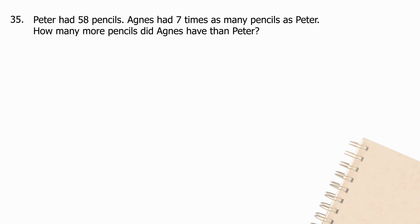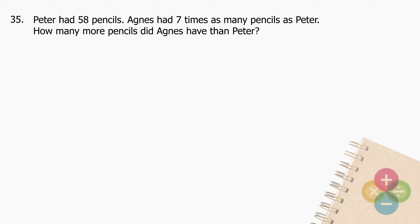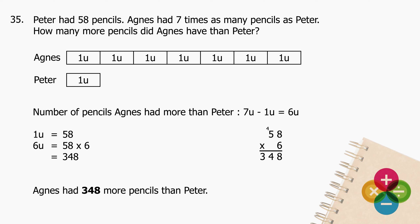Question 35: Peter had 58 pencils. Agnes had 7 times as many pencils as Peter. How many more pencils did Agnes have than Peter? Subtract 1 unit from 7 units — the difference is 6 units. 1 unit equals 58. 6 units: multiply 58 by 6 and the product is 348. Agnes had 348 more pencils than Peter.